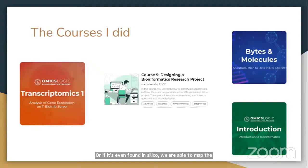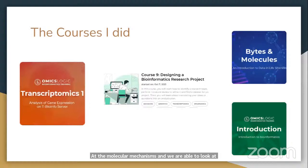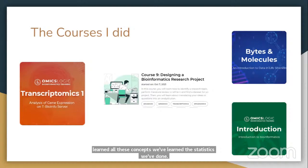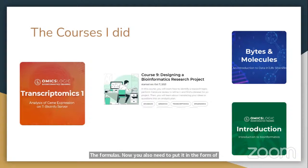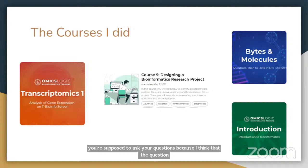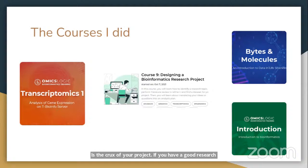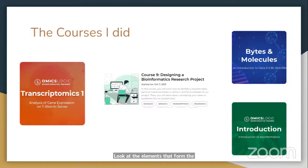With that data we can do statistical analysis, look at the pathways involved in diseases, examine molecular mechanisms, understand disease basics, and identify biomarkers. After learning these concepts, statistics, and formulas, you also need to put them into the form of a bioinformatics project. I did a course that taught me how to write reports from start to finish — the structure, how to frame research questions, and how to differentiate data between disease and non-disease states or look at upregulated and downregulated gene expression.